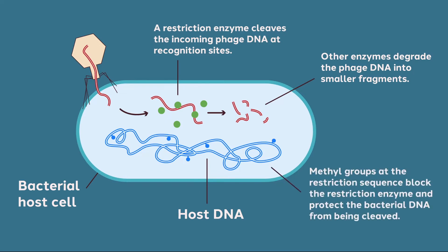Left on its own, the bacterial restriction enzyme would be just as happy to cleave its own DNA. Thus, by luck or selection, bacteria have systems to protect their genome. Relevant to restriction and modification are the methylases that add methyl groups to the bacterial chromosome as it replicates. These methyl groups provide a number of functions; in this context, the presence of the methyl group prevents the restriction enzyme from destroying its own DNA.